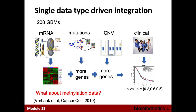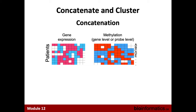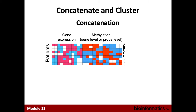We're going to talk about some different integration approaches. I'll go over concatenating and clustering — using all those data types combined into the analysis — iCluster, and then similarity network fusion. Concatenate and cluster is pretty straightforward: here we have methylation data and gene expression data and we literally just concatenate them together. Now for each patient we have all their gene expression and all their methylation levels per probe. Can anyone tell me some issues that might arise if you just concatenate all your gene expression data and methylation data and then cluster your patients?